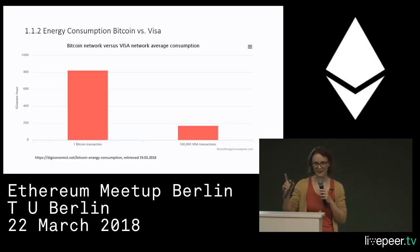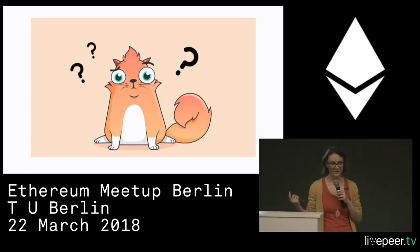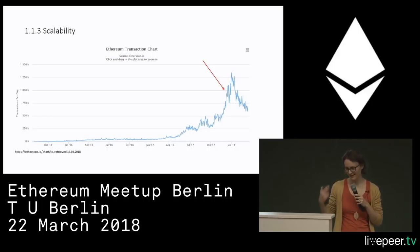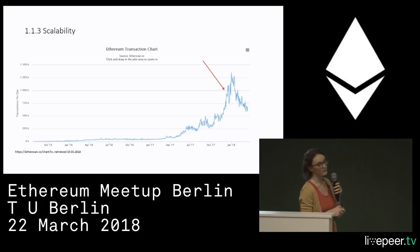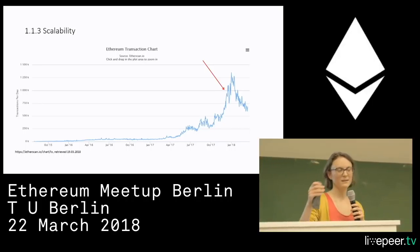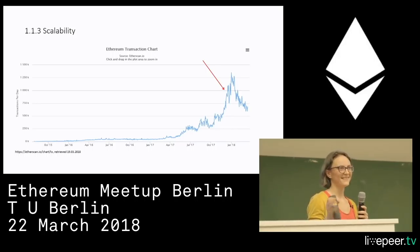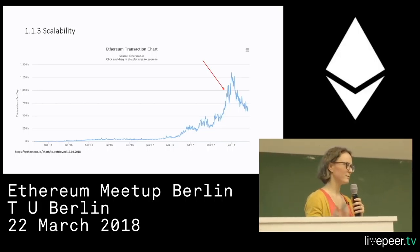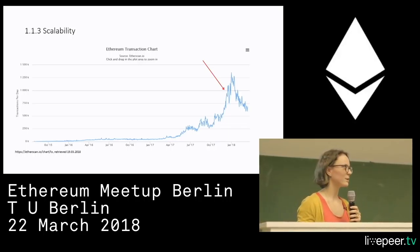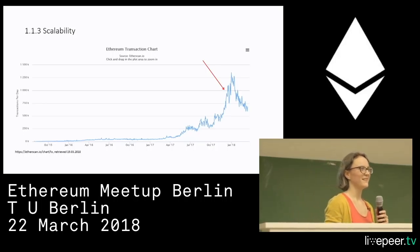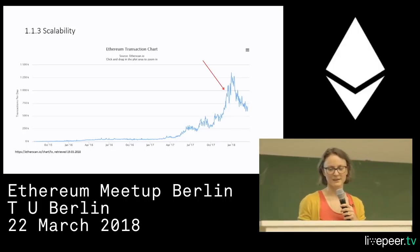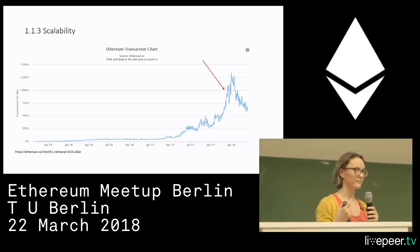And there is a third massive problem with POW consensus algorithms: scalability. Here we see the Ethereum transaction chart, and the red line is where CryptoKitties entered — the first DApp running on the Ethereum network. When this started, it reached up to one million transactions in 24 hours and nearly smashed the network: transactions were not working, an ICO had to be postponed, and the breeding cycle of CryptoKitties was threatened. These are examples of what major problems cryptocurrencies are facing.